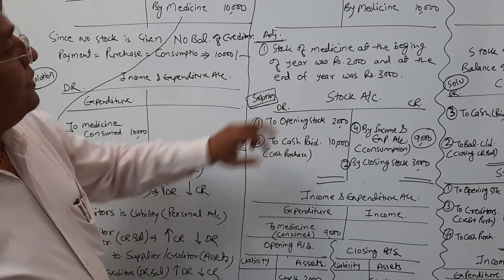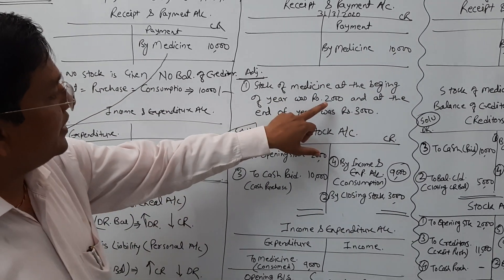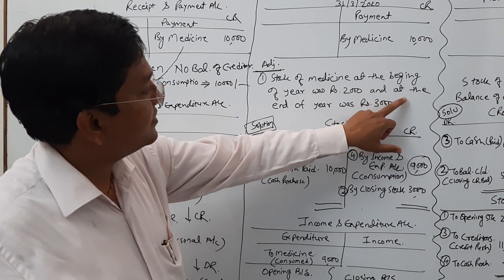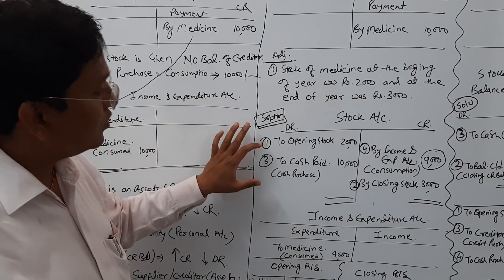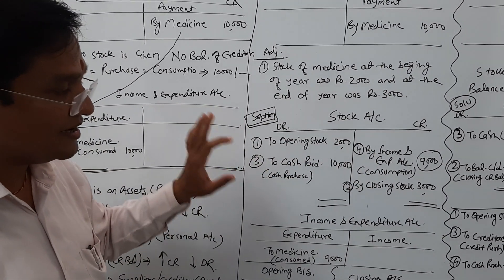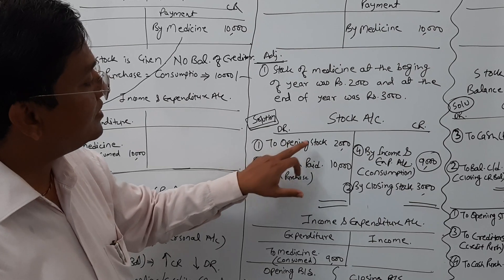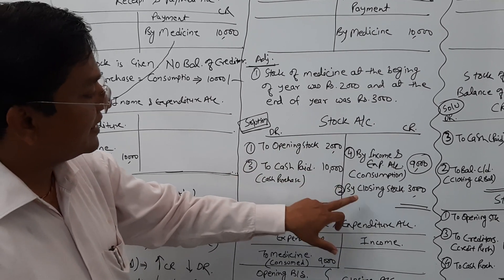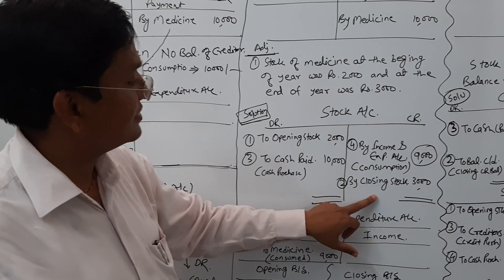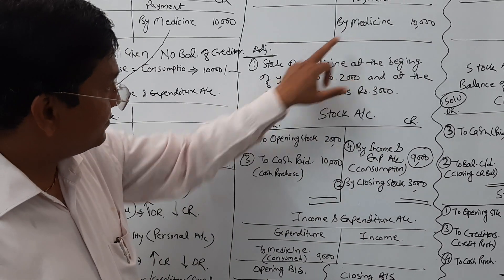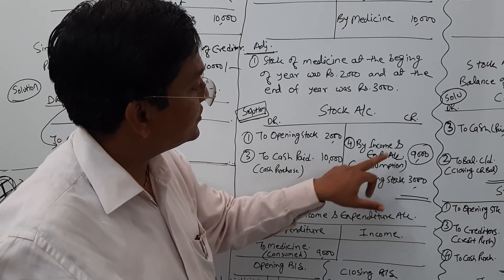To summarize situation 2: payment side by medicine 10,000; adjustment — opening stock at the beginning 2,000, closing stock at the end 3,000. Stock is an asset having debit balance. Opening stock goes on the debit side (same side); closing stock goes on the opposing credit side. Cash paid 10,000 goes on the debit side. The balancing figure — by income and expenditure account — gives consumption of 9,000.